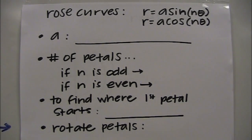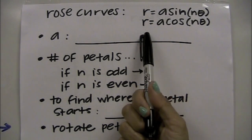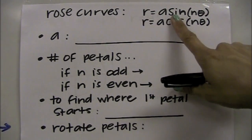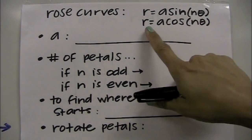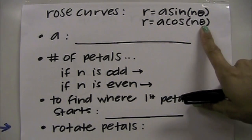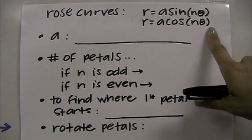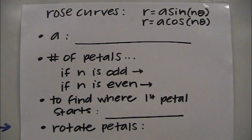The next type of curve we're going to talk about are rose curves. Their equations are going to be of the form r equals a sine of nθ or r equals a cosine of nθ. So if your equations are of that form, the type of curve is going to be a rose curve.